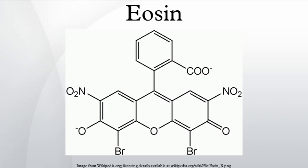Eosin is a fluorescent red dye resulting from the action of bromine on fluorescine. It can be used to stain cytoplasm, collagen and muscle fibers for examination under the microscope. Structures that stain readily with eosin are termed eosinophilic.